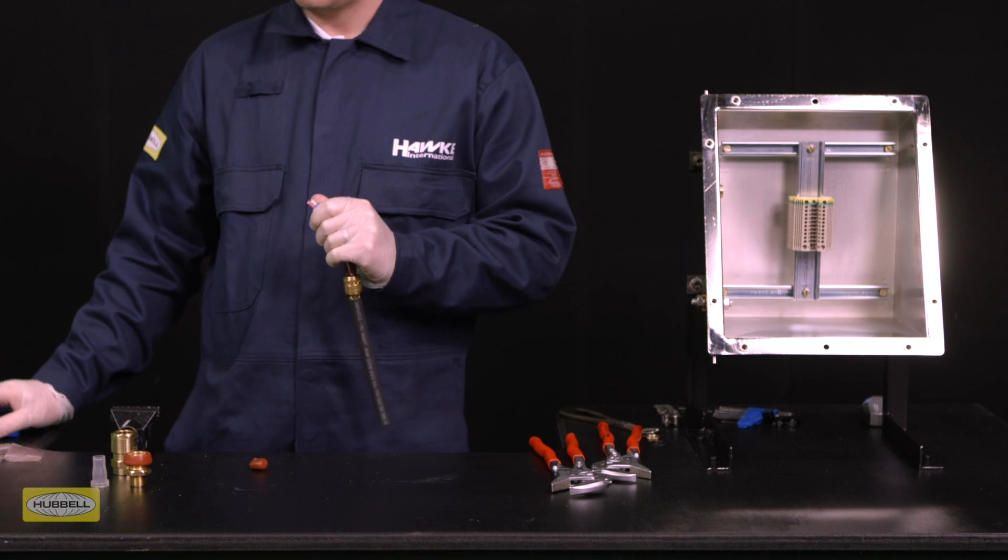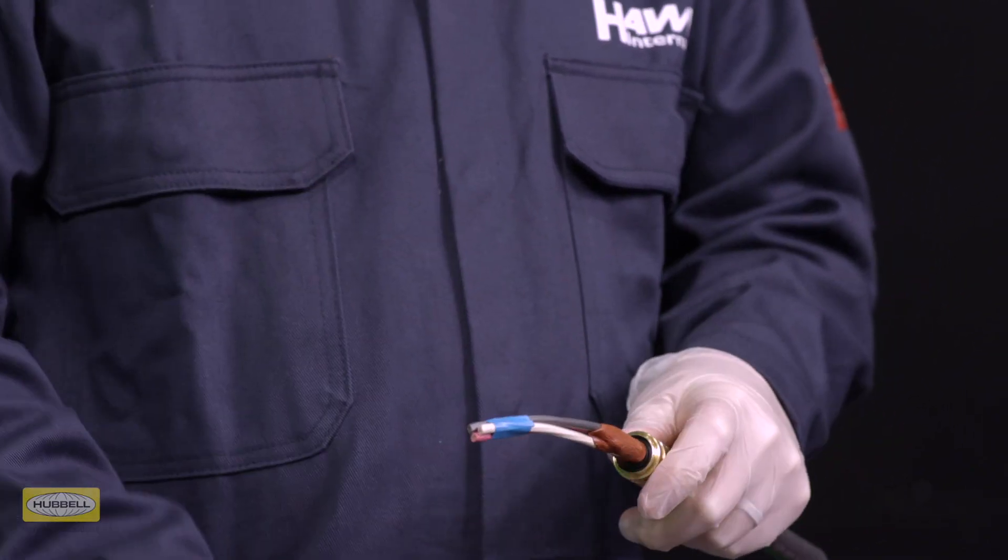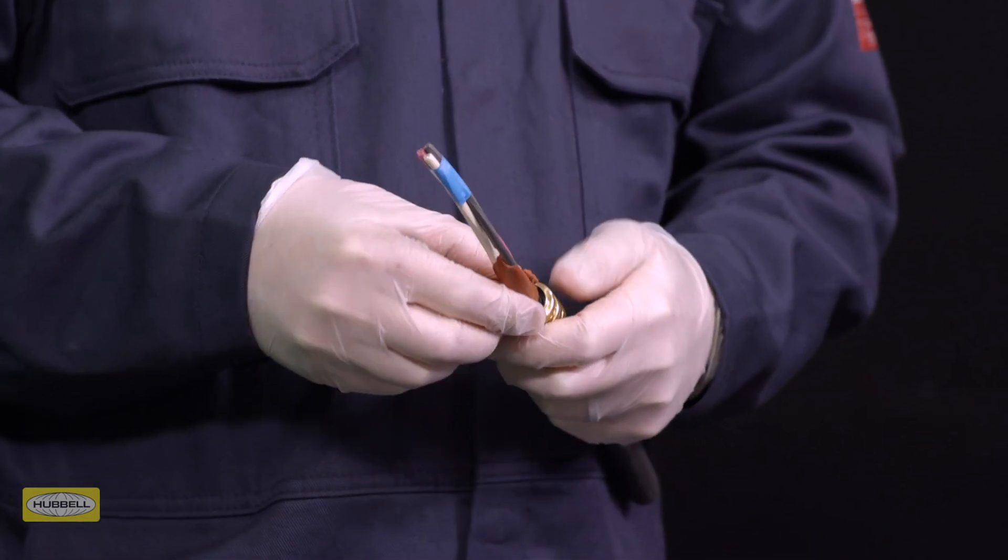Once all the gaps and voids have been filled, bring the conductors back together. Tape the conductors together to prevent disturbance of the compound seal whilst packing.